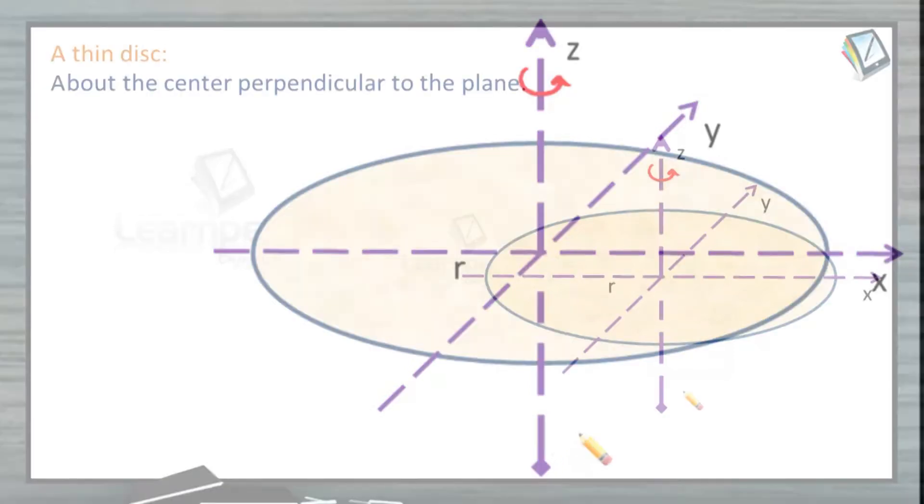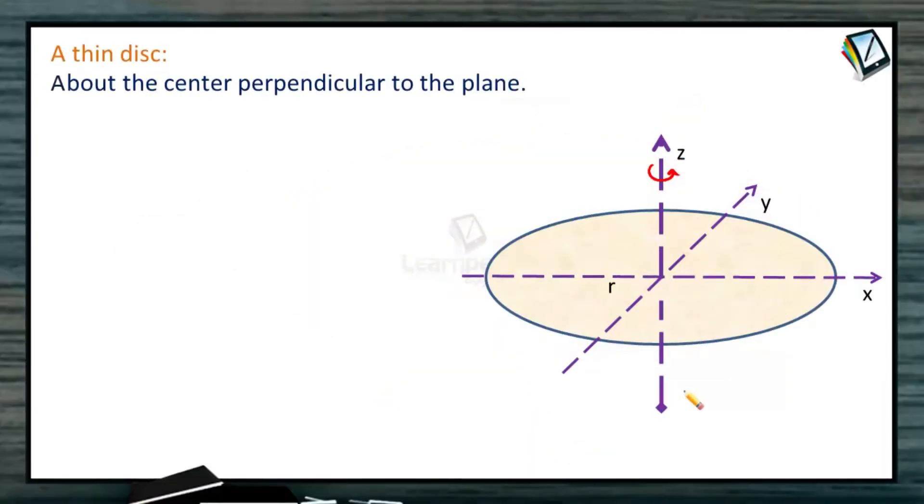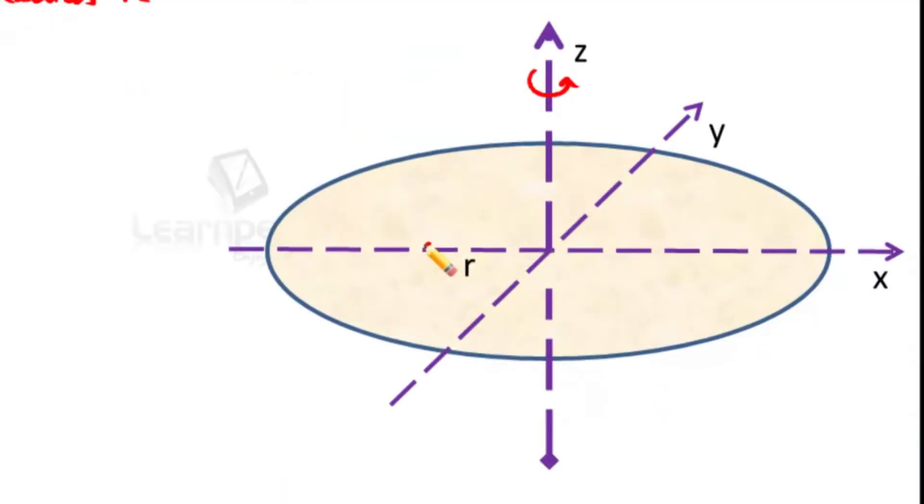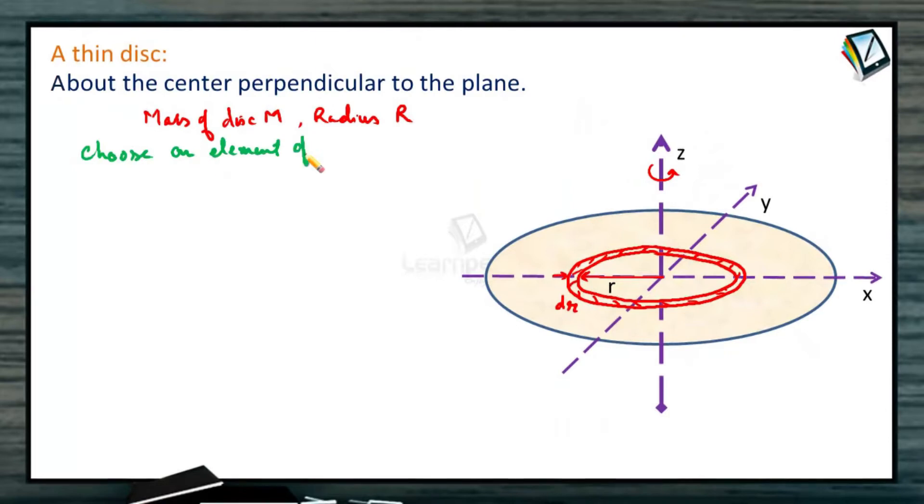To calculate moment of inertia about the Z axis, consider a disk of mass M, radius R, rotating about this Z axis. Take out an element of radius small r with dr in the shape of a ring. From here at a distance of small r, generate a ring of thickness dr. This is the ring which we have cut. Radius of the ring is small r and thickness dr.